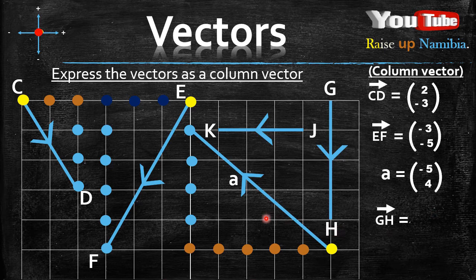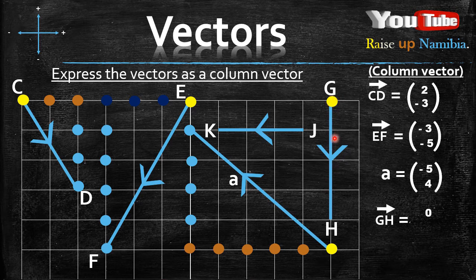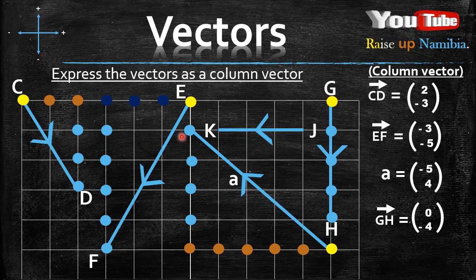Now for GH. Find the starting point — it's here. On the x-axis, will we be moving? No, because the starting point is vertically opposite the ending point, so we won't move on the x-axis — the x value is zero. On the y-axis, to get to H we move down: one, two, three, four lines. Since we moved down, it's negative four. So GH is zero, negative four.